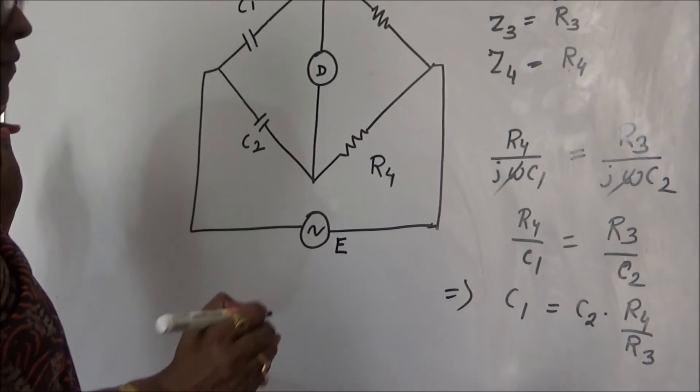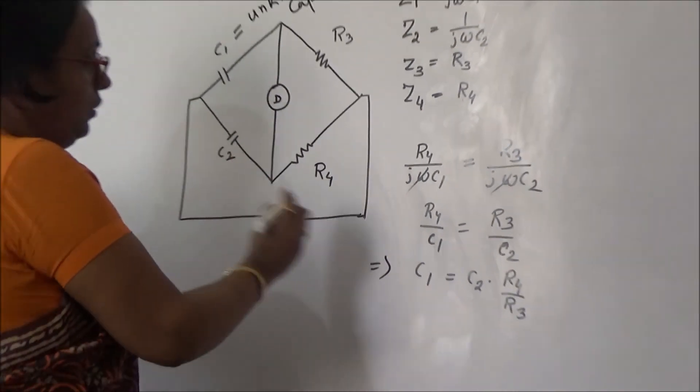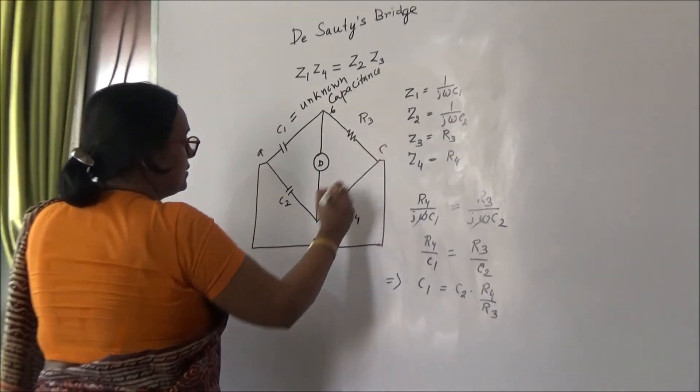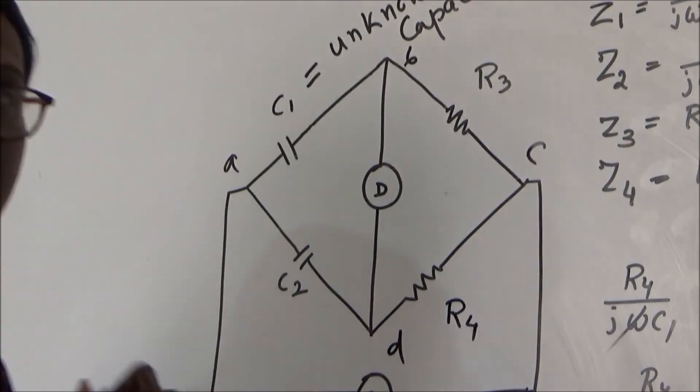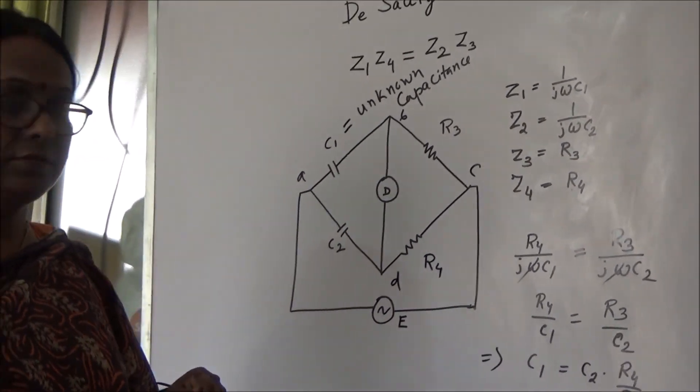The phasor diagram is - how to draw the phasor diagram? Now we know that this is A, this is B, this is C, this is D.